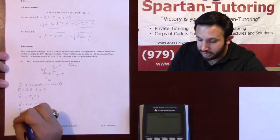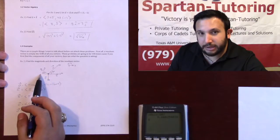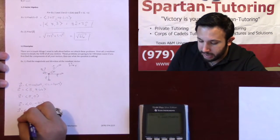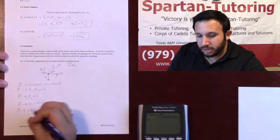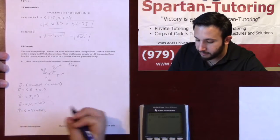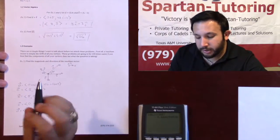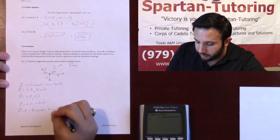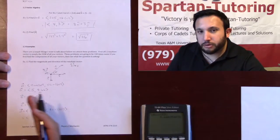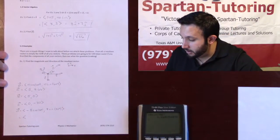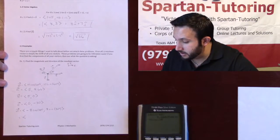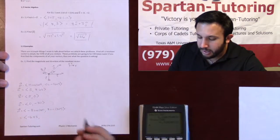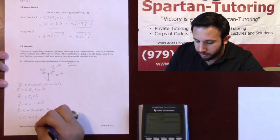Finally, for vector D, the x component is in the negative x direction, and it's adjacent to this angle. So because it's going negative x, it's going to be negative. The magnitude is 8, and because it's adjacent, we go cosine of 30 degrees. As for the y component, it's still positive but opposite of my angle, so it'll be a positive 8 sine of 30 degrees. Plugging into the calculator: negative 8 cosine of 30 degrees gives negative 6.93, and sine of 30 degrees is one half, so the y component is 4. This is vector D.